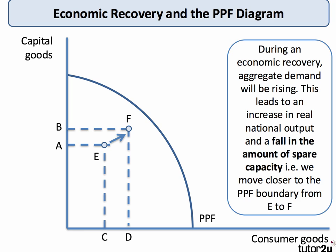Another aspect of the PPF is showing economic recovery — the upturn phase of the economic cycle. Normally in a recession we would be at point E, a combination of capital and consumer goods well within the production possibility frontier, with high unemployment and businesses operating with underutilised capital. As the economy recovers, we move closer towards the PPF — for example, from point E to point F — involving a fall in spare capacity as resources are more efficiently and intensively utilised.